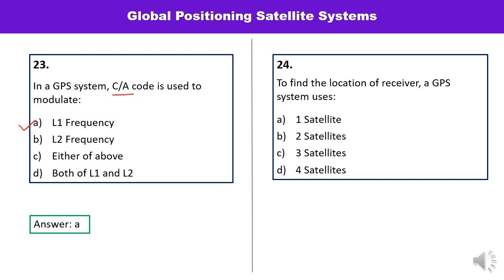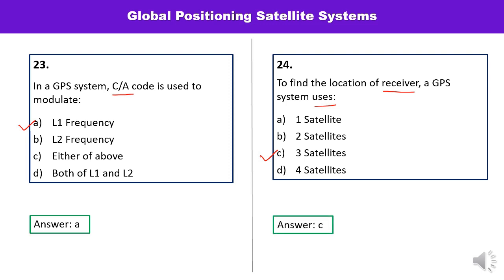Question number twenty-four: To find the location of a receiver, a GPS system uses how many satellites — 1, 2, 3, or 4? To find the location of a receiver, a GPS system uses 3 satellites, so C is the correct answer.